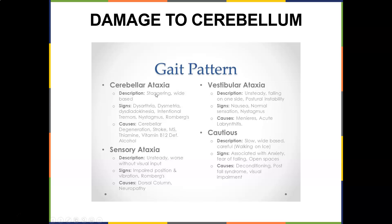If somebody has issues with the cerebellum, they'll have what we call a cerebellar ataxic gait. The signs are dysarthria, dysmetria, dysdiadochokinesia, intentional tremors, nystagmus, and Romberg's sign. The description is a wide staggering base. Causes include cerebellar degeneration, stroke, MS, thiamine deficiency, and vitamin B12 deficiency. We also call this the drunken gait.